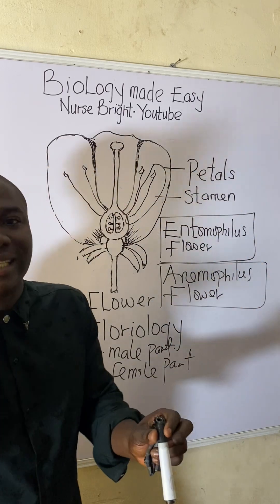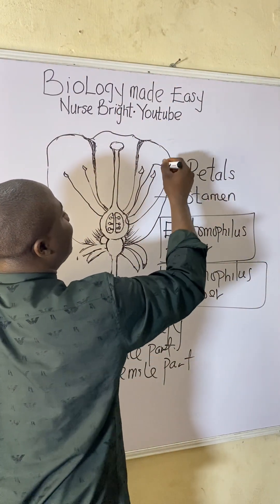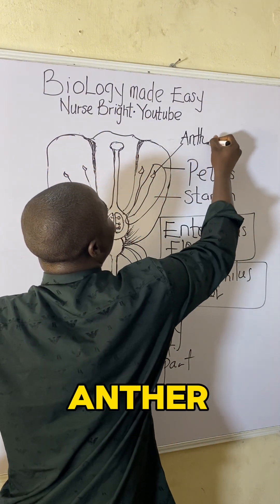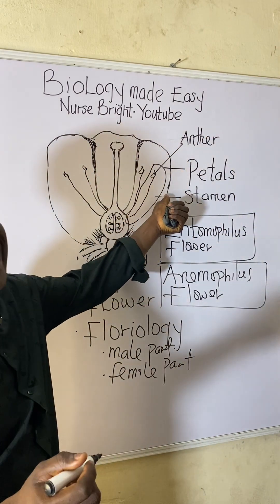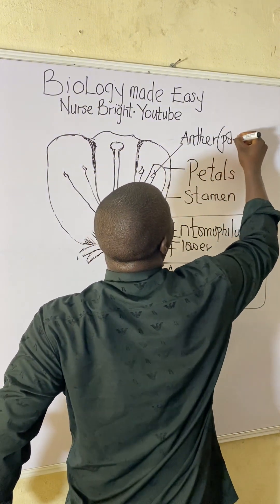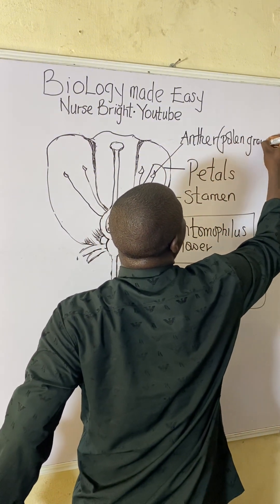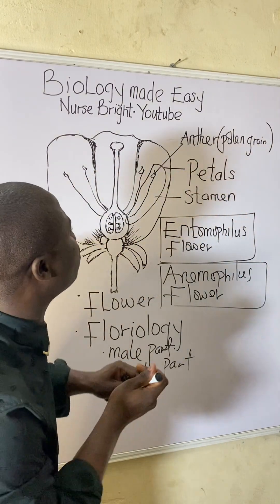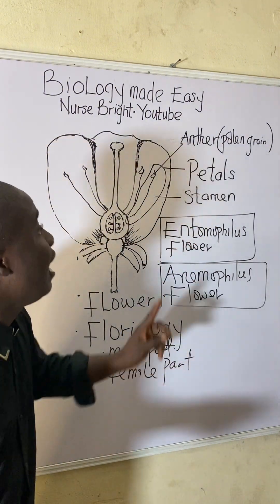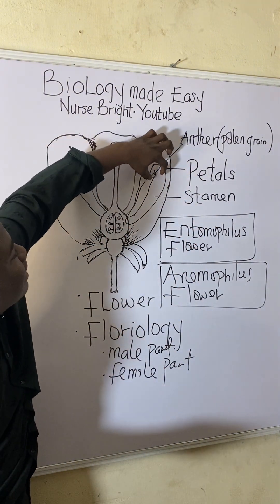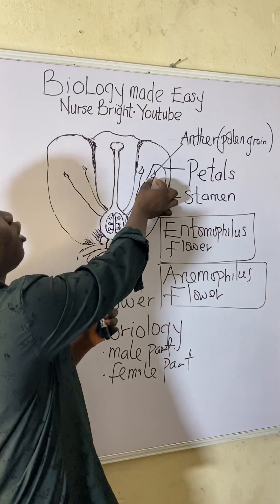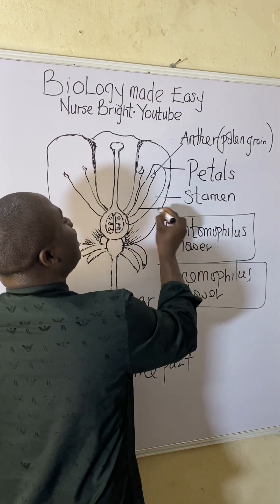At the top of the stamen is a structure called the anther. This is where the male gamete is produced. The male gamete is called the pollen grain. There is also a thin structure that supports the anther, and it is called the filament.